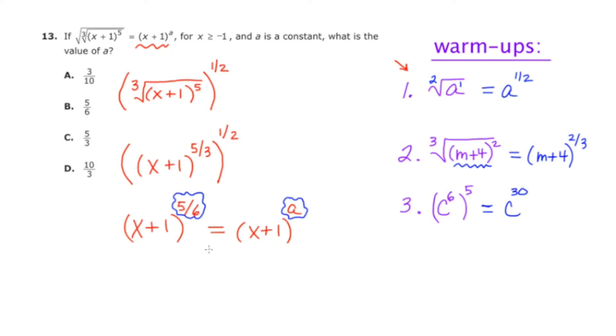So in order for these two expressions to be equal, what do you think a needs to be? Well, if you said that a needs to be five-sixths, then you're correct. If a is five-sixths, then the two sides will look exactly the same. So the answer is five-sixths, which is answer choice B.